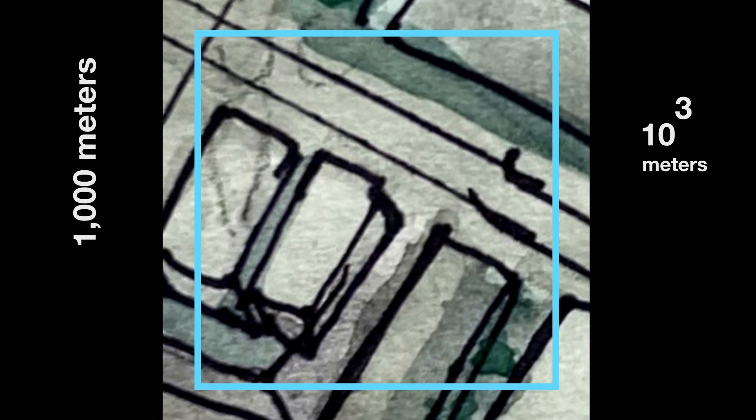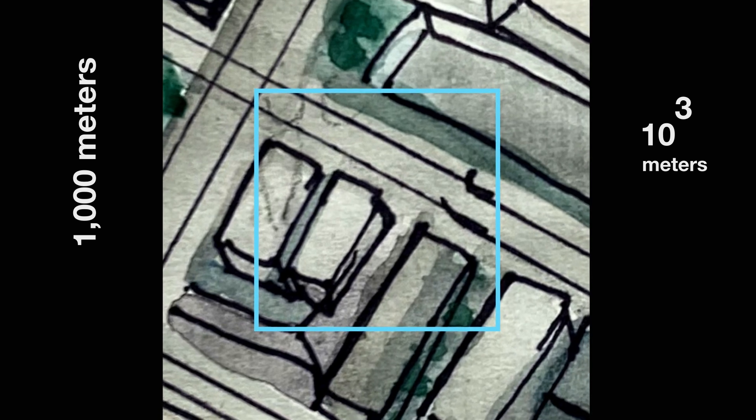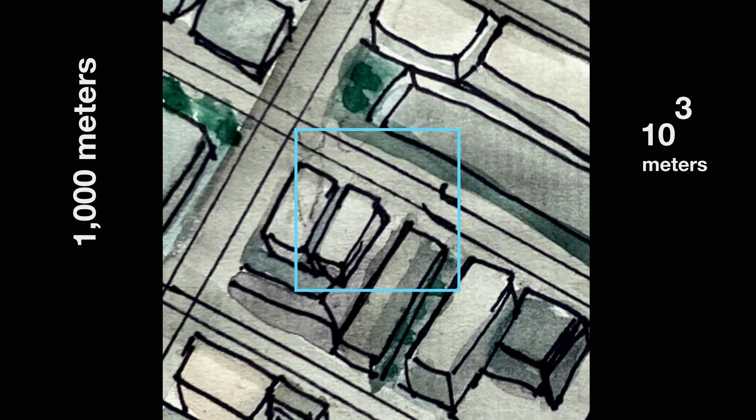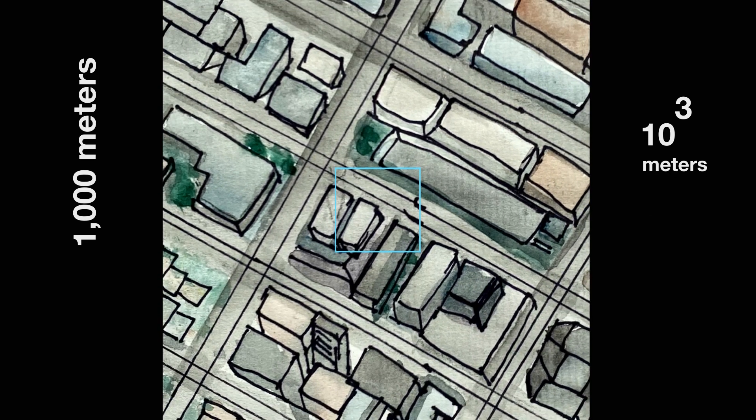This is the Borough of Manhattan, approximately 22.7 square miles. 1,000 meters wide, the distance a racing car can travel in 10 seconds.